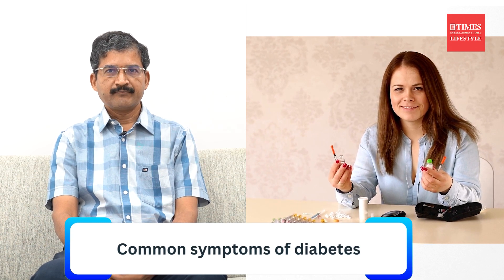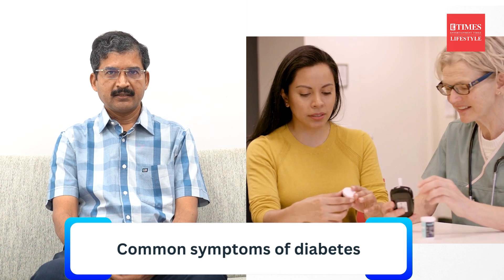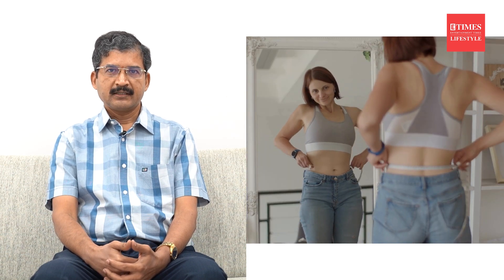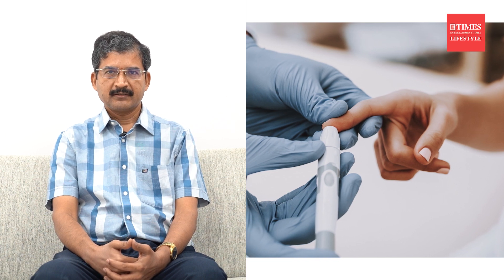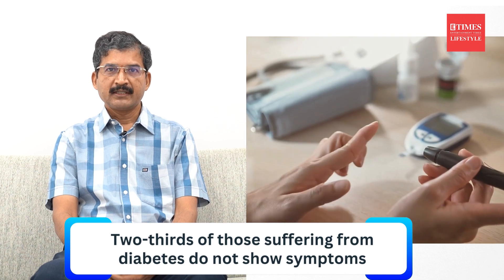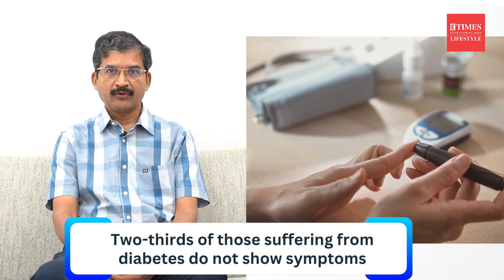The second misconception is about symptoms of diabetes. Common symptoms include polyuria (increased frequency of urination), polydipsia (increased thirst), polyphagia (increased hunger), weight loss despite food intake, tiredness, fatigue, and impaired wound healing. However, symptoms are seen in only one third of patients — largely two thirds of diabetic patients do not experience these symptoms, so it is asymptomatic. People think that if you don't have symptoms, you don't need to test for diabetes, which is not true. You must get tested periodically to know whether you have diabetes or not.